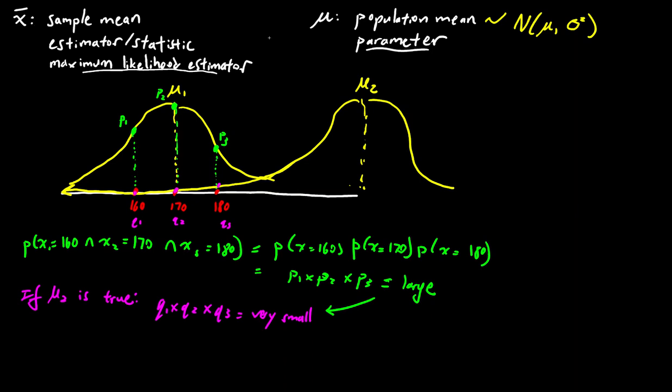But intuitively, that's what a maximum likelihood estimator is. It's how do we calculate a guess for mu. X bar is a guess for mu. And how do we calculate a guess for mu such that the probability of having seen our data points here, 160, 170, 180, is as high as possible. So that's the common sense intuition behind what a maximum likelihood estimator is.